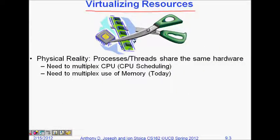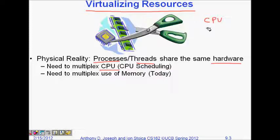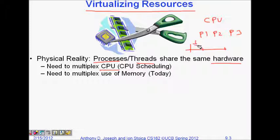Let's look at virtualizing resources. There are many processes and threads that are running and they share so much hardware of the computer. For example, the CPU which executes the code — you have different applications so the CPU will be executing code for each one of them. Let's say P1, P2, and P3 are running, so your CPU will provide time slices — one-third of a second for each process.